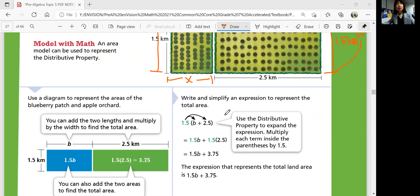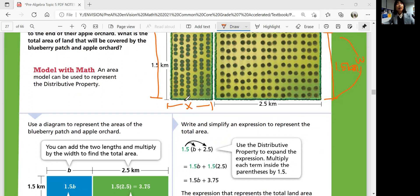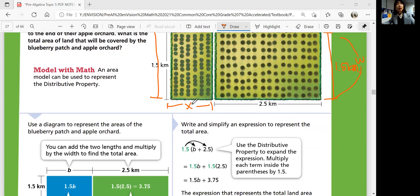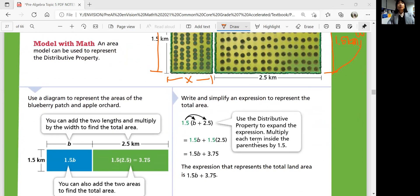So you can write an expression. 1.5 times b, or if that's not x, it could be b, it could be whatever variable, plus 2.5. You can use distributive property to multiply them out and say that's 1.5b plus 3.75. That's an equivalent expression for this. They're equal.